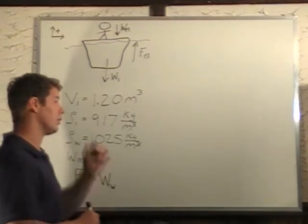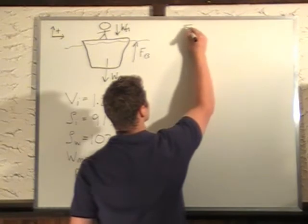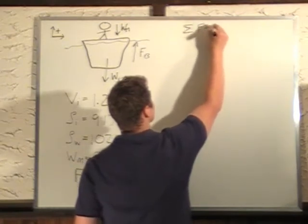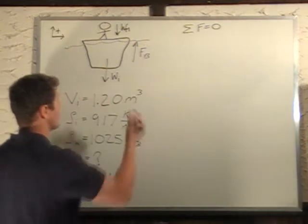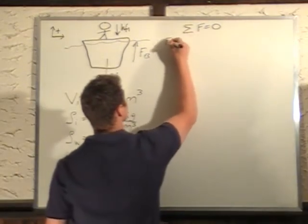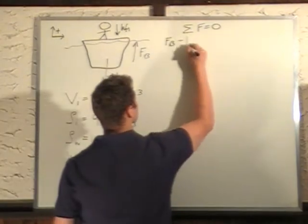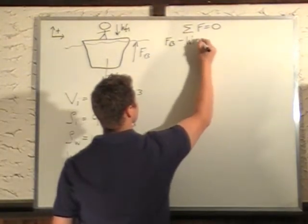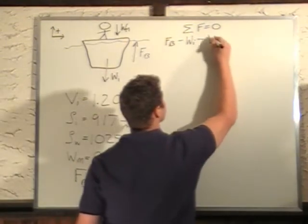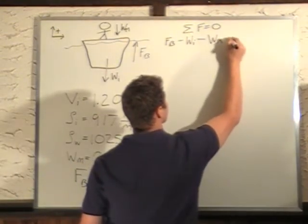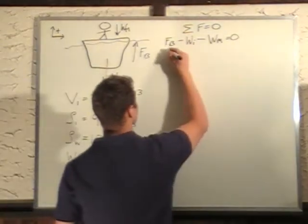So we know that the sum of the forces equals zero. We're going to be in equilibrium. So let's put in our forces. We have the buoyant force upward minus the weight from the ice minus the weight from the man. That's equal to zero. So we're looking for the weight of the man, so we'll solve for the weight of the man.